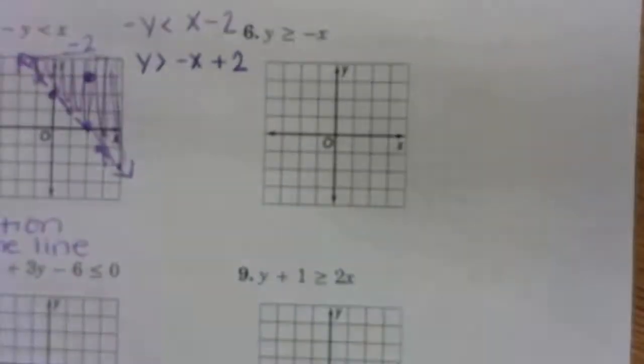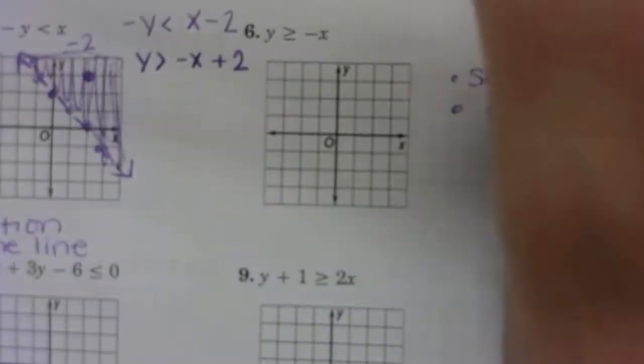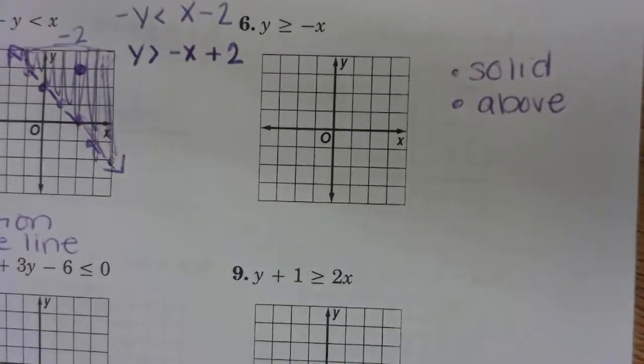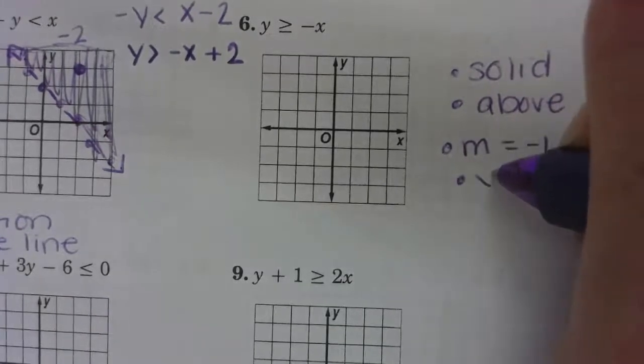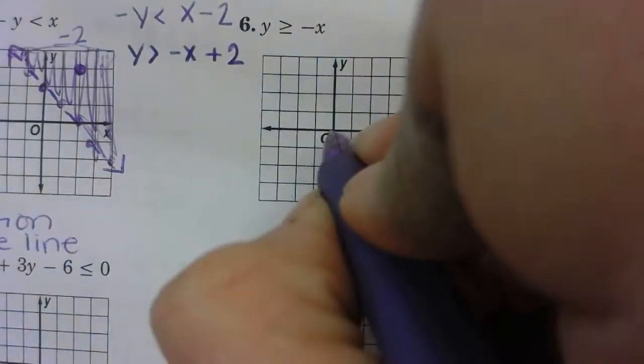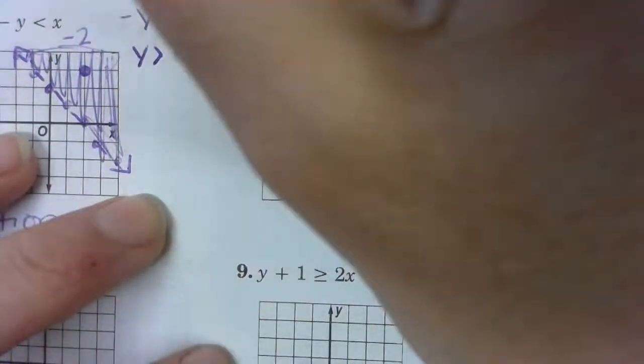Okay, Chris, in number six, is my line solid or dashed? Awesome. Okay, Jacqueline, are we shading above or below? Fantastic. Okay, Matt, what's my slope? Good. And Sam, what is my y-intercept? Fantastic. Okay, so you plot your point zero, zero. Apply your negative slope. Make that line solid and shade above.